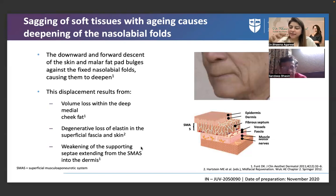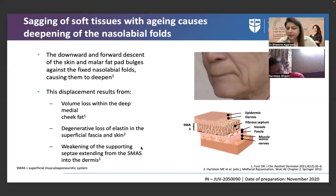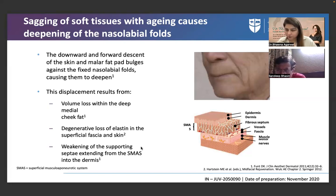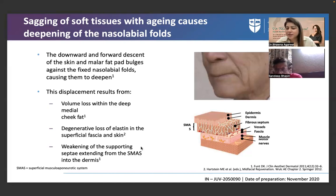For individuals biased against injectables, start with RF, then gradually introduce PRP, then explain that injected PRP gives even better results than topical. Once they accept PRP injections and skin boosters, you can progress to fillers. This stepwise approach helps overcome fear of needles while retaining clients long-term, since they're seeing results at every session.